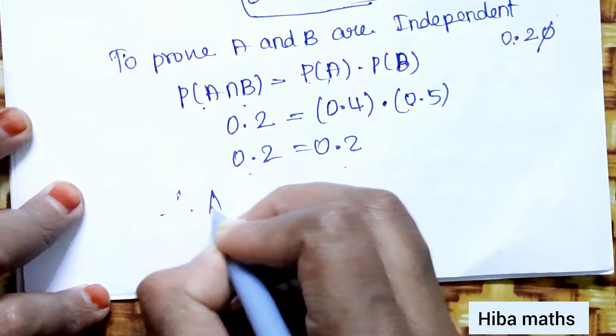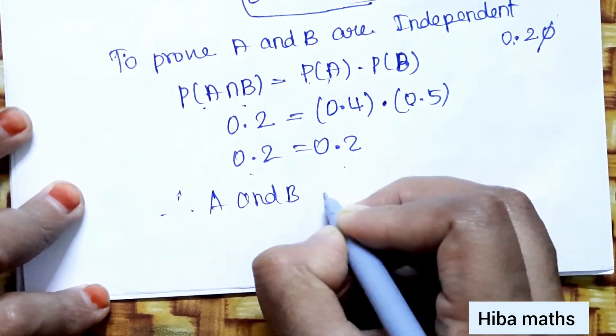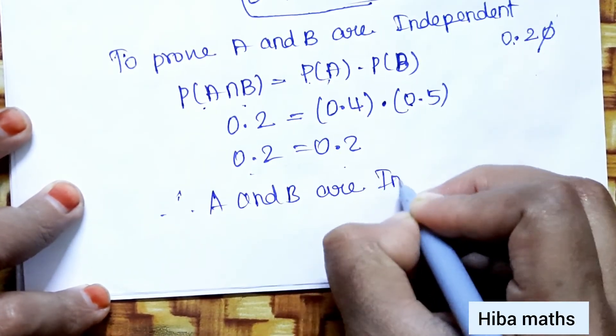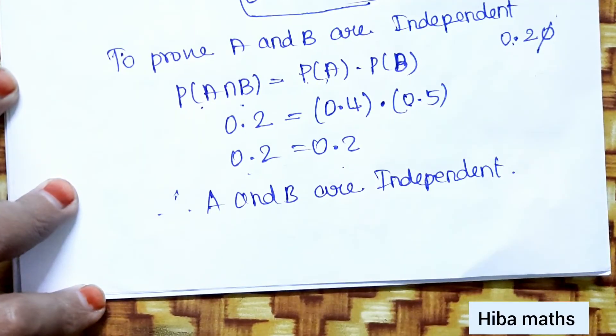Therefore, A and B are independent. Nearly all of you will understand this. Thank you so much for watching.